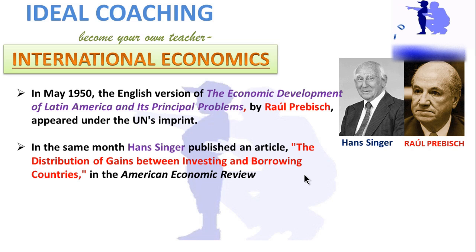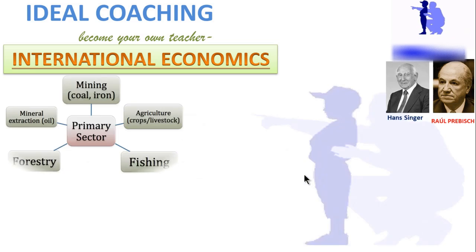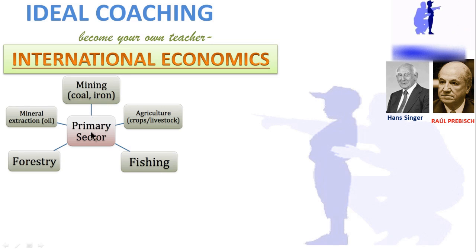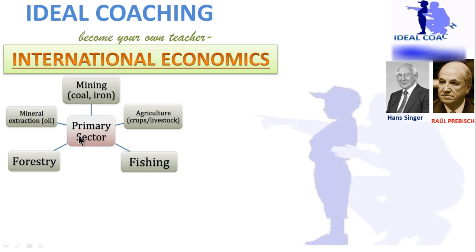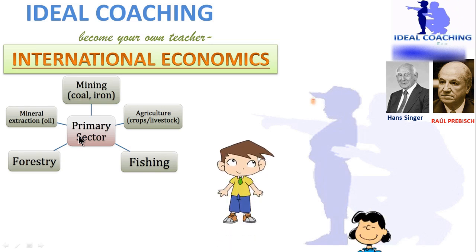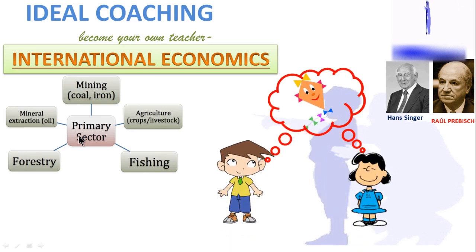First of all, let us understand what the primary sector is. All raw material products are known as primary sector products. For example, mining, agriculture, fishing, forestry, and mineral extraction — all of this comes under the primary sector.